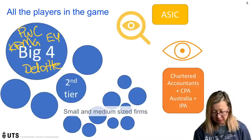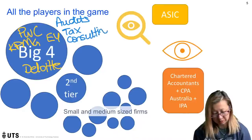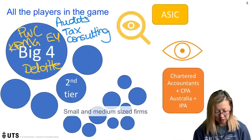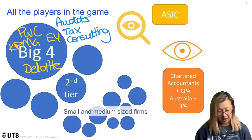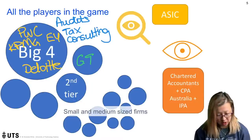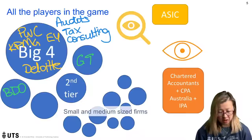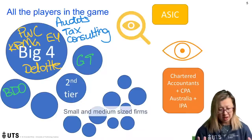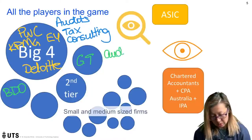Besides the big four you also have a large number of second-tier firms. These are still global firms — organizations like Grant Thornton and BDO — and there are probably around ten of those in total in that second tier. They work on a model of offering audits, tax, and consulting. Then you've got a lot of small to medium-sized firms of a whole range of different sizes, for example Walker Wayland, right down to really small practices that might only have one or two partners and a range of staff underneath them.